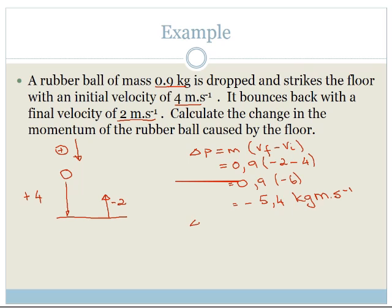So therefore we can say that the delta P is equal to 5.4 kilograms meters per second upwards. Upwards. Right.